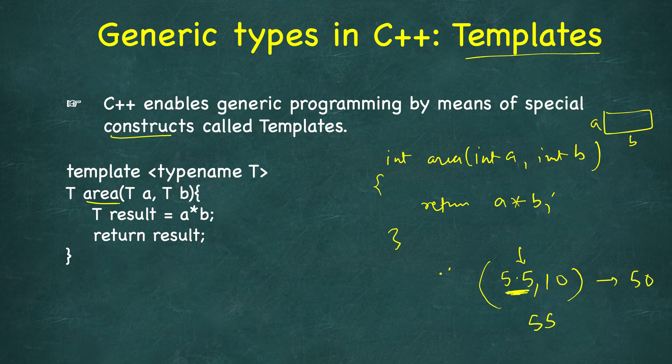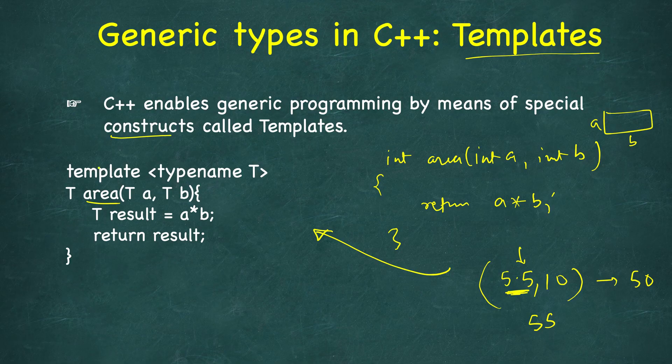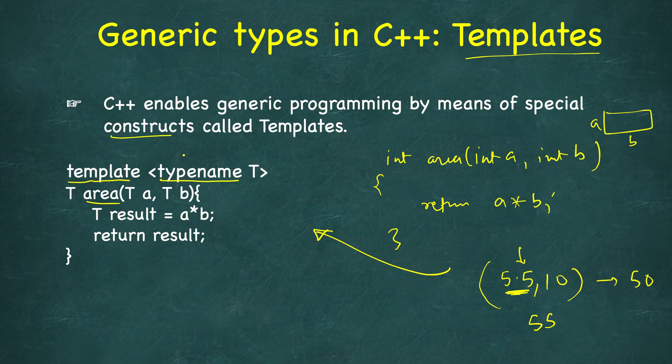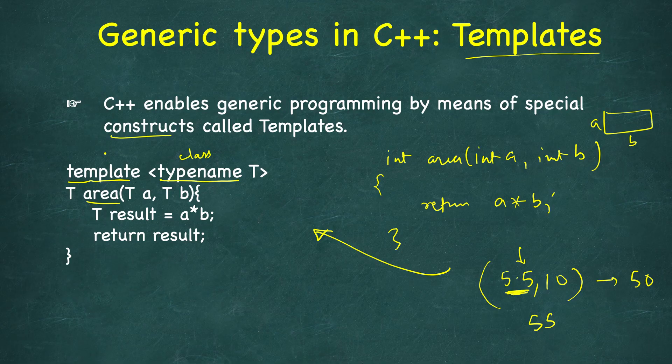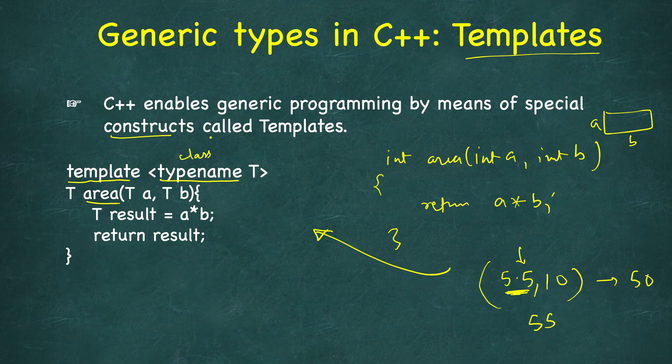You can have templatized functions as well as classes, and the STL library has both functions as well as classes. Then you write typename or class and T. Here I've just used one type but you can have multiple—you can have T1, T2 and so on.